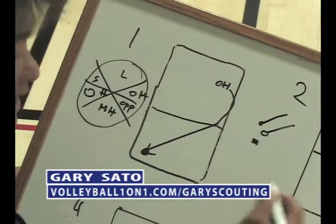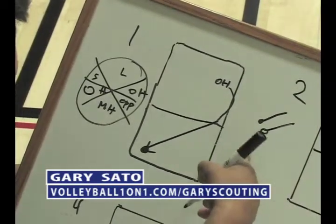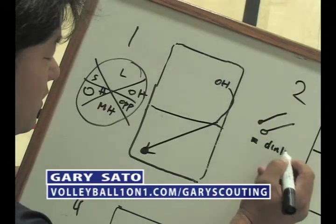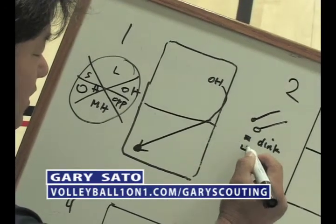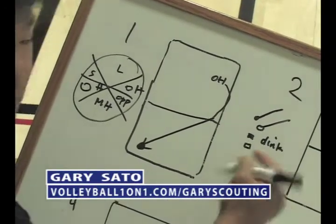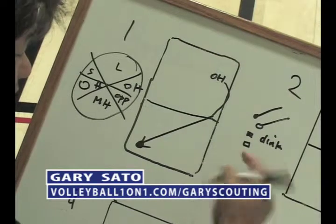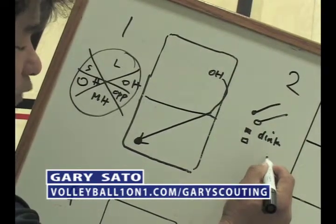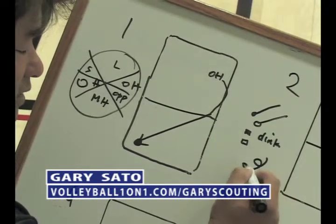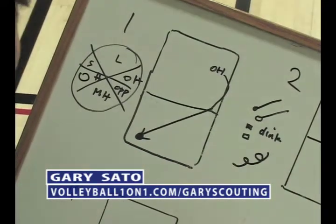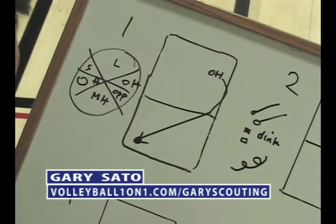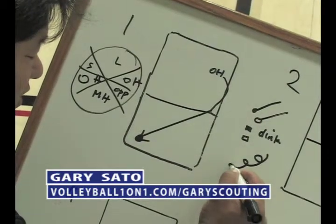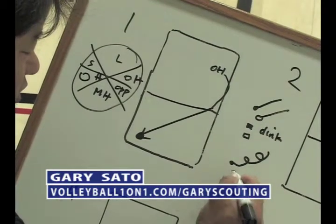It means they dink the ball for a kill, and it means a dink that got dug. If they do a roll shot, I'll put it in a line like this, and then it'll end with either a kill or a circle.